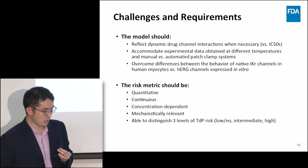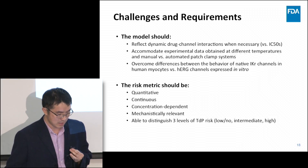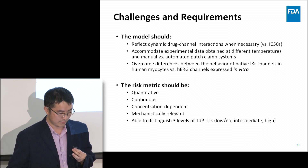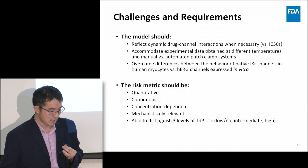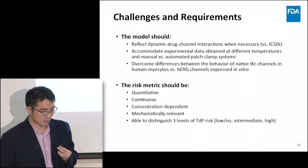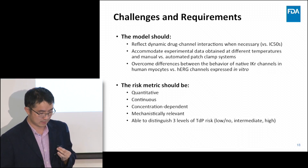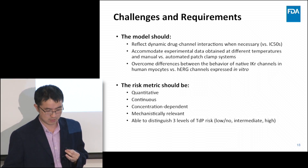The risk metric coming out of the model should be quantitative — a continuous value, concentration dependent, and mechanically relevant. Very importantly, it has to distinguish three levels of TdP risk: low, intermediate, and high, as identified for the 12 SEPA training compounds.